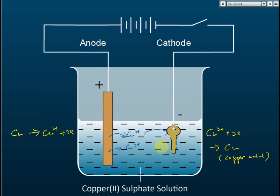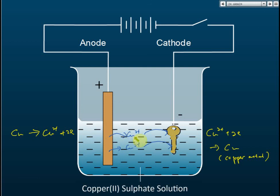These copper ions are then attracted to the cathode, discharged there, and deposited on the surface of the object — and that's how electroplating occurs. At the cathode, copper ions become copper metal. At the anode, copper metal becomes copper ions released into the electrolyte. As a result, the copper electrode becomes thinner over time as its atoms form copper ions.